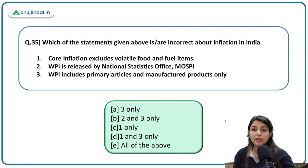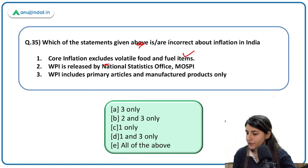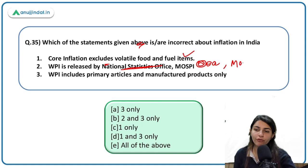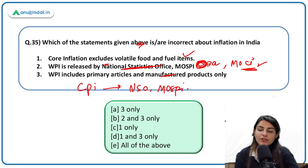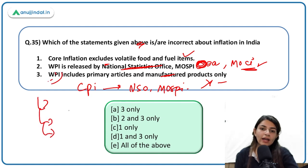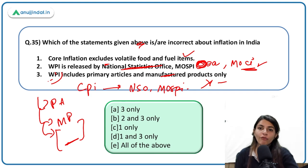More on inflation: core inflation excludes volatile food and fuel items — correct. WPI is released by NSO — incorrect; WPI is released by the Office of Economic Advisor under the Ministry of Commerce and Industry. CPI is brought out by NSO under MOSPI. WPI includes primary articles and manufactured products only — incorrect; there are three categories in WPI: primary articles, manufactured products, and a third category. Please note what the third classification is.